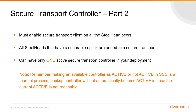You must enable secure transport client on all other steelhead pairs in which you want secure transport to encrypt data. On the SCC, all the appliances that have a securable link are added to a secure transport group. If you do not have a securable link on any steelhead, then that steelhead will not be part of a secure transport group. You can have only one active secure transport controller in your deployment. Making an available controller active or not active in SCC is a manual process. A backup controller will not become automatically active in case the current active one is not reachable.